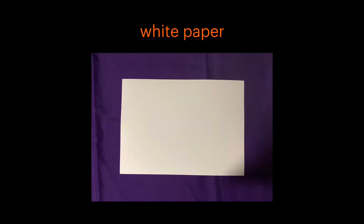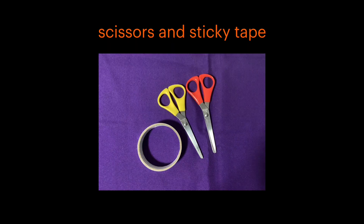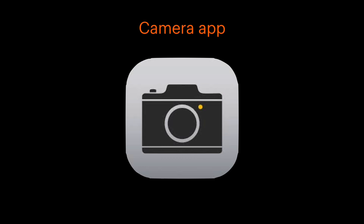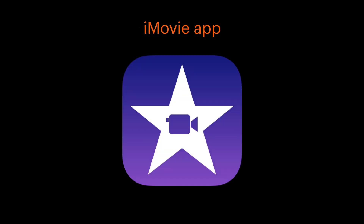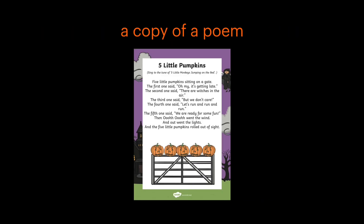To do this you'll need some white paper, some coloured paper — green or blue works best — colouring pens or pencils, some scissors and some sticky tape or glue, the camera app, the iMovie app, a background image for your animation and a copy of a poem.